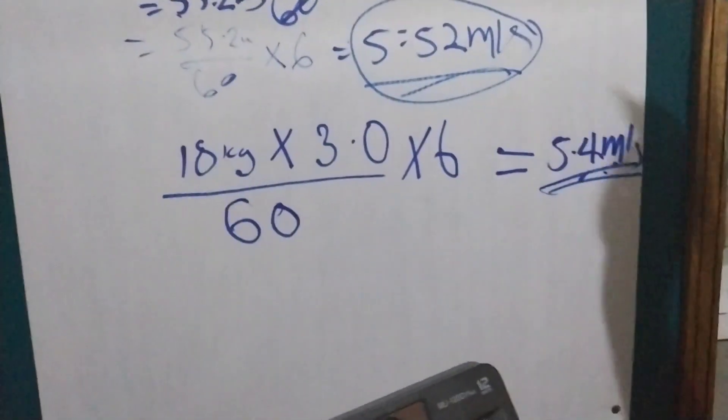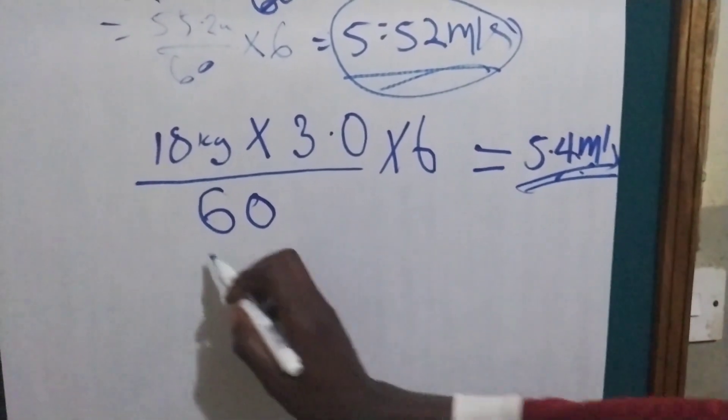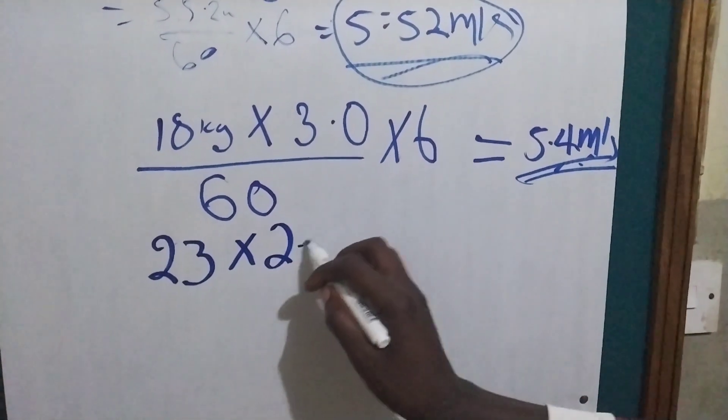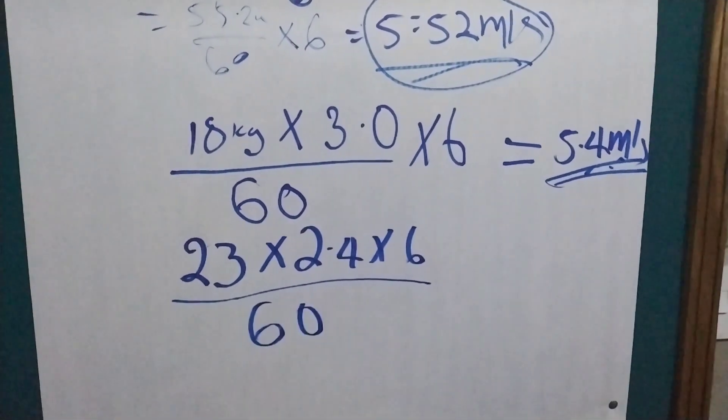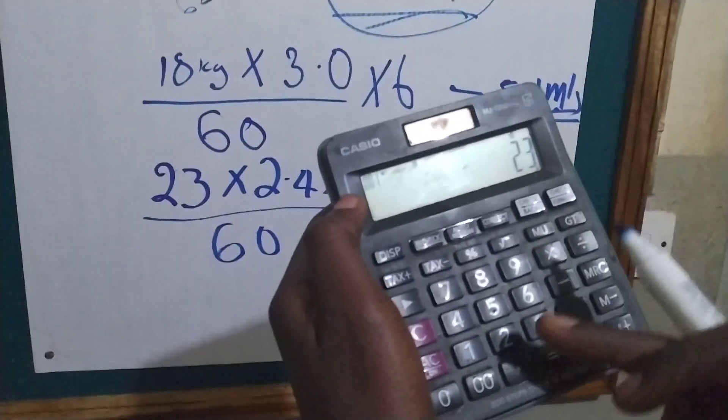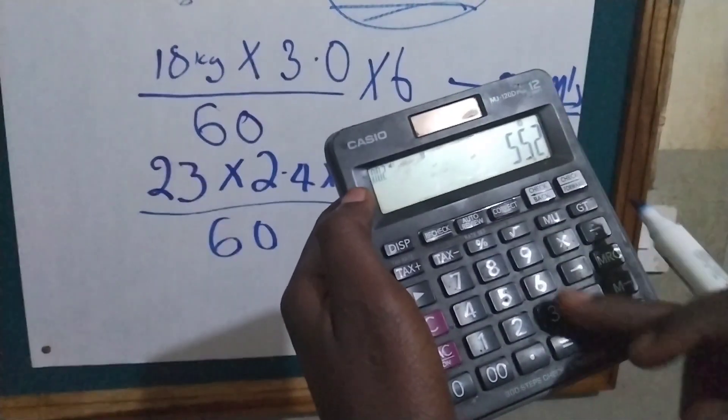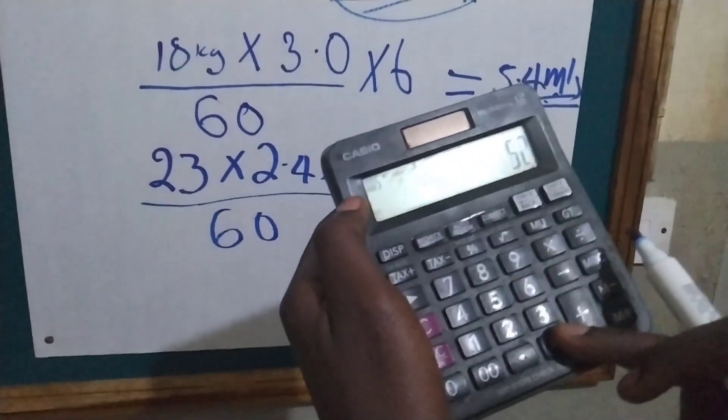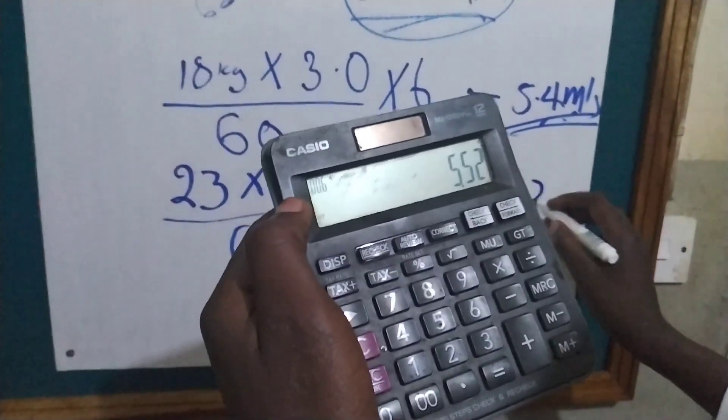So how about if someone is having kilogram greater than 20? So let's use 23 times 2.4 times 6 divided by 60. So what will we get? 23 times 2.4 times 6 divided by 60. So we are going to get 5.52 milliliters.